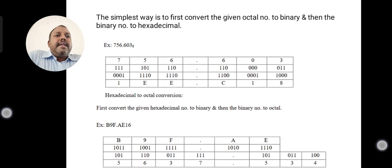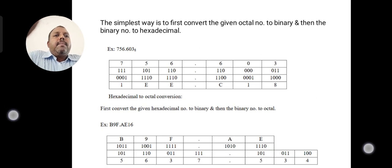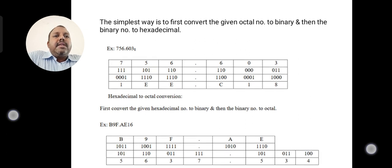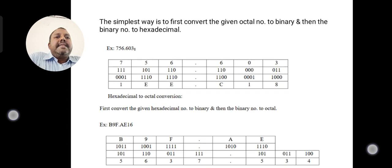Here the example value is 756.603 with base 8, that is, the radix value is 8, which means it is an octal number. The equivalent binary values are: 7 is 111, 5 is 101, 6 is 110. Then, after the decimal point: 6 is 110, 0 is 000, 3 is 011. These binary digits are then converted to hexadecimal, giving the equivalent hexadecimal number.